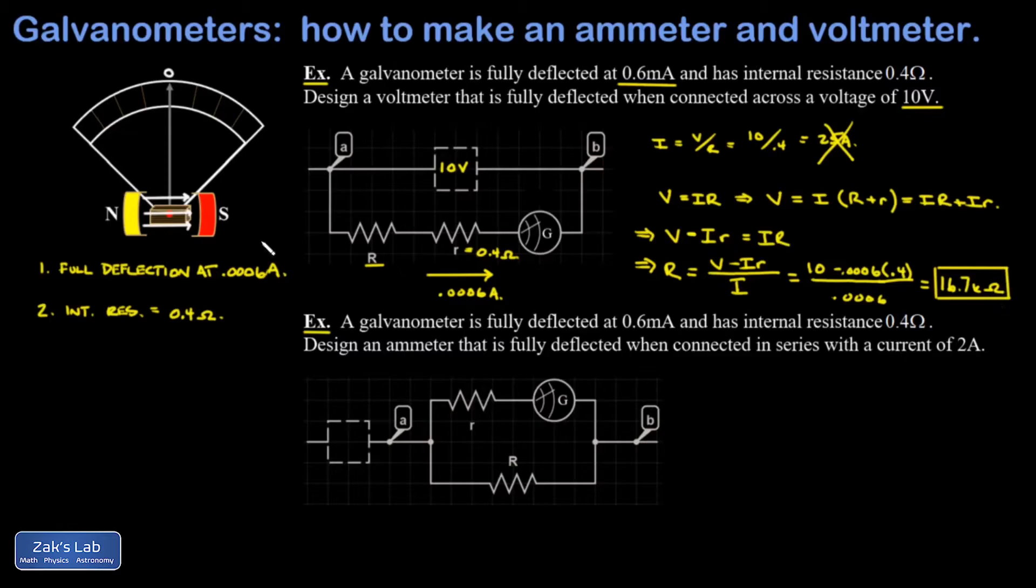What we've accomplished here is we made the resistance in the galvanometer branch just right, so that if we hook it up in parallel over a 10 volt circuit element, we're going to pull a current of 0.0006 amps and get a maximum deflection of the needle. When the needle is here, we're looking at 10 volts deflection, and this is how we can begin to calibrate the galvanometer to be a voltmeter.